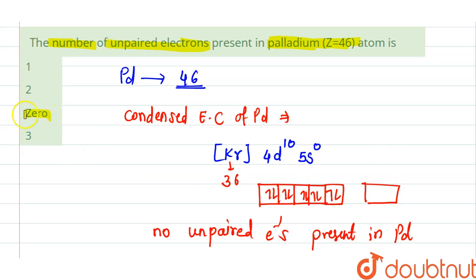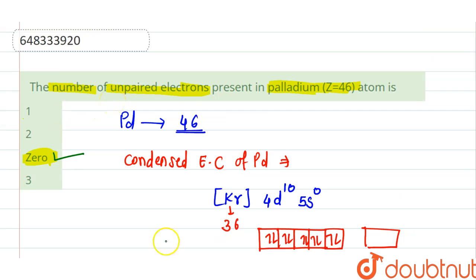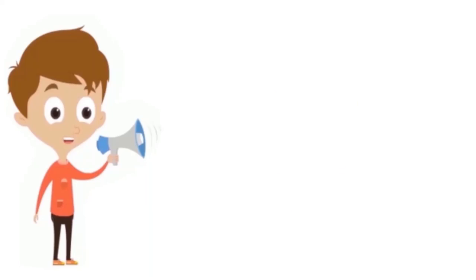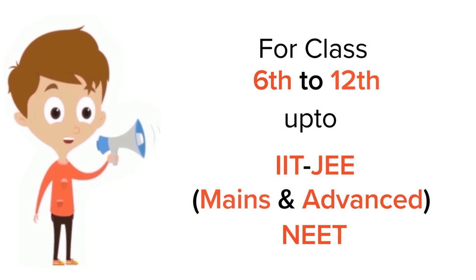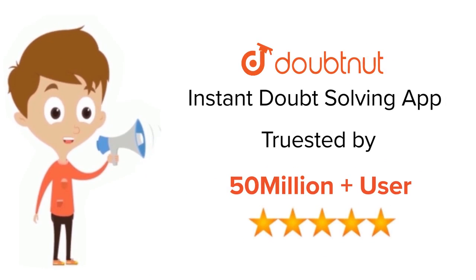So the correct option is option number three, that is zero. Thank you. For class 6 to 12, IIT JEE and NEET level, trusted by more than 5 crore students, download Doubtnet app today.